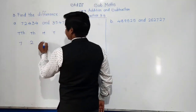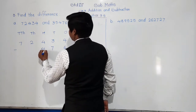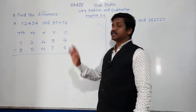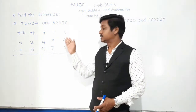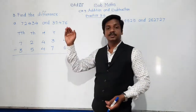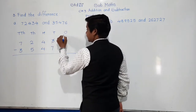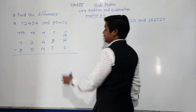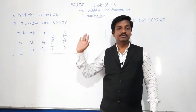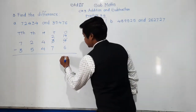72,434 minus 35,476. At ones place: 4 minus 6 — not possible, because 4 is less than 6. Take borrow from tens place. Cut 3, take 1 here, so 4 becomes 14 and 3 remains 2. 14 minus 6: count after 6 till 14 — that gives 8 fingers, so 14 minus 6 is 8.